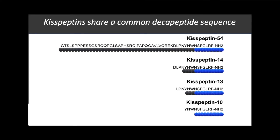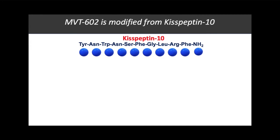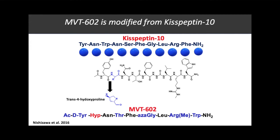In the present study we investigate a novel Kisspeptin receptor agonist called NVT602, which was developed based on modifications to Kisspeptin-10 to increase potency, stability and water solubility. Whilst Kisspeptin has a number of potential indications for the treatment of female reproductive disorders, to date there is no data describing the profile of NVT602 in women.